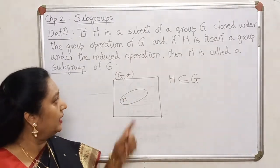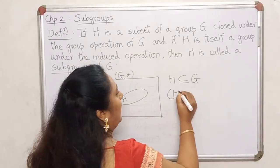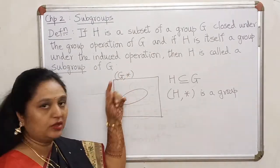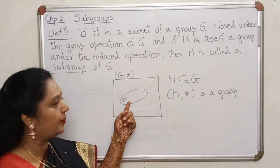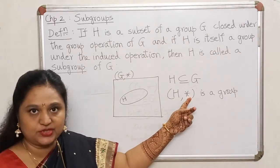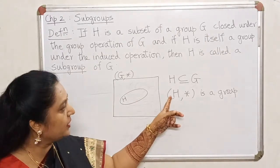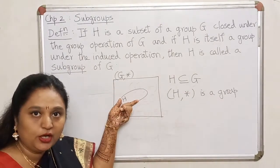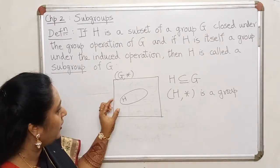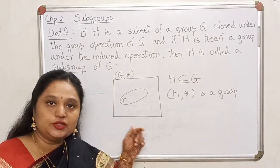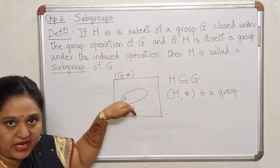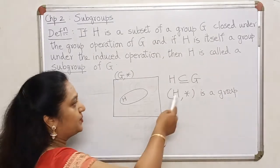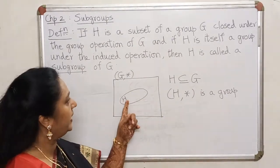If it so happens that with respect to the same operation as in G, H also becomes a group, then — noting that the operation star is on the set G but we can look at the restriction of this operation on H — H with respect to this restricted operation should also be a group. If that happens, it is like having a smaller group sitting inside a bigger group. If H is not just a subset of G but also becomes a group on its own with respect to the same operation as in G, that restricted operation is called the induced operation on H, and we say that H is a subgroup of G.